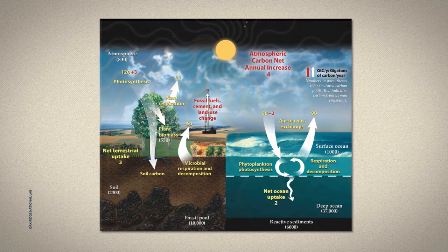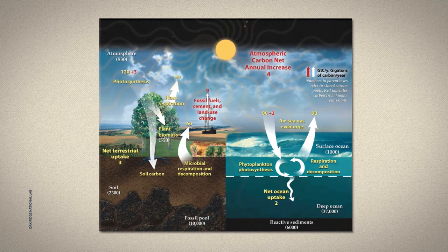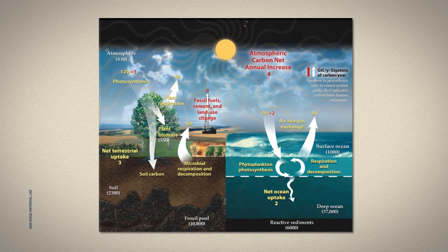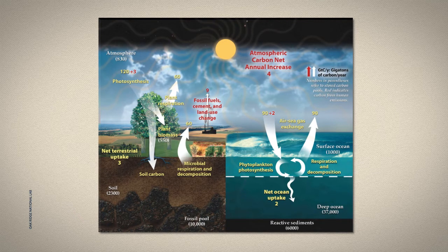The yellow numbers are flows, with units of gigatons of carbon per year. So for example, photosynthesis on land takes about 120 billion tons of carbon out of the atmosphere every year. Another example on the other side of the diagram shows that the oceans release about 90 billion tons of carbon to the atmosphere each year. The red numbers are flows of carbon associated with human activities, which will be covered in a different lesson.